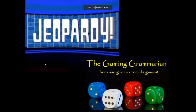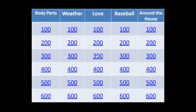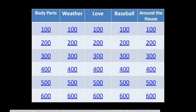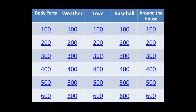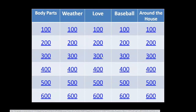In Google Slides it appears exactly the same from the start, but when we click on a number — such as 'Love 300' — and then go back to the game board, the number stays the exact same color. This means we cannot know for sure just by looking at the board which numbers have been chosen and which haven't.